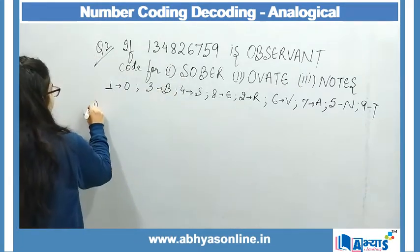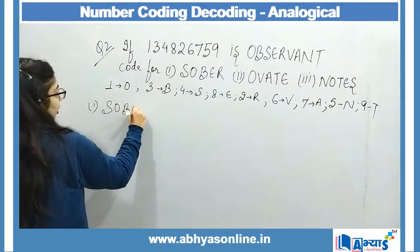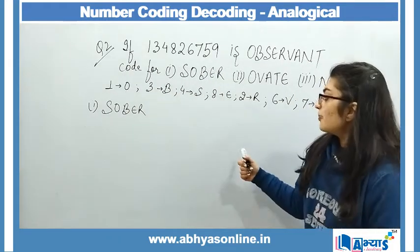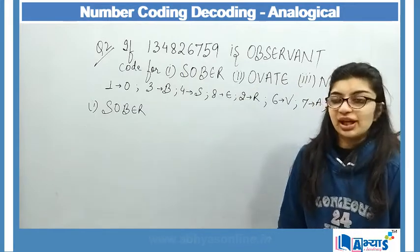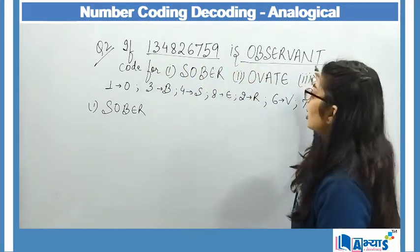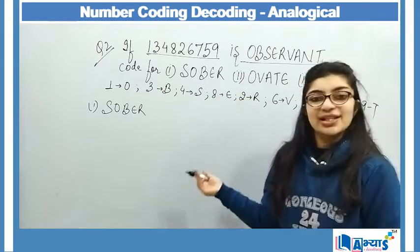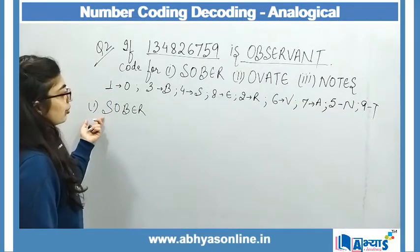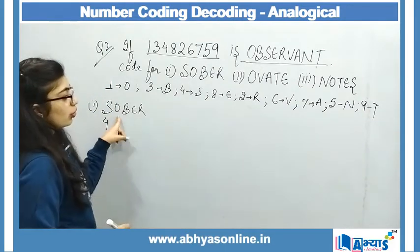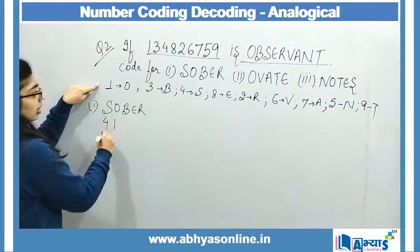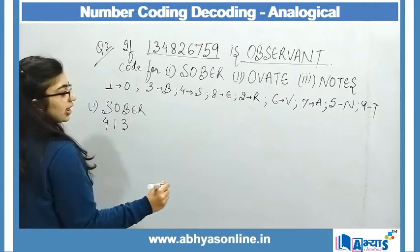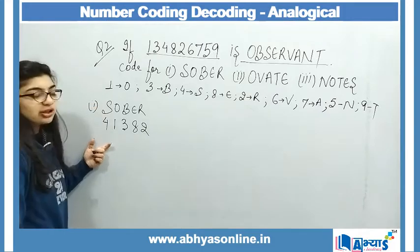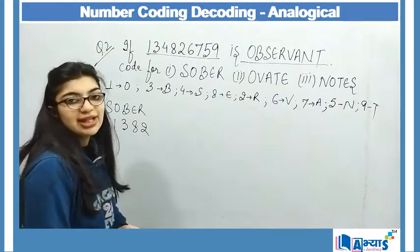The first term is SOBER. अब SOBER के corresponding code derive करना है। S का code है 4, O के corresponding है 1, B है 3, E है 8, R है 2 — तो SOBER का code होगा 4, 1, 3, 8, 2 — hence derived.